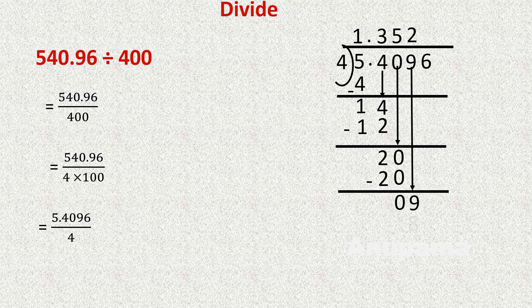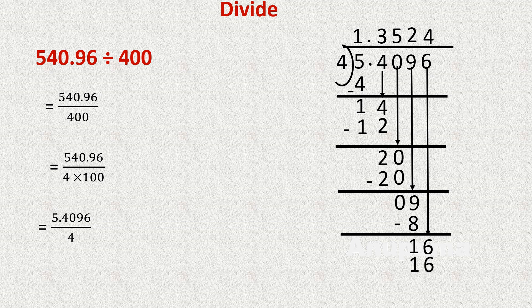Bring down 9: 4 twos are 8; 9 minus 8 is 1. Bring down 6: 4 fours are 16; subtract, giving 0. So the quotient is 1.3524, which is our answer.